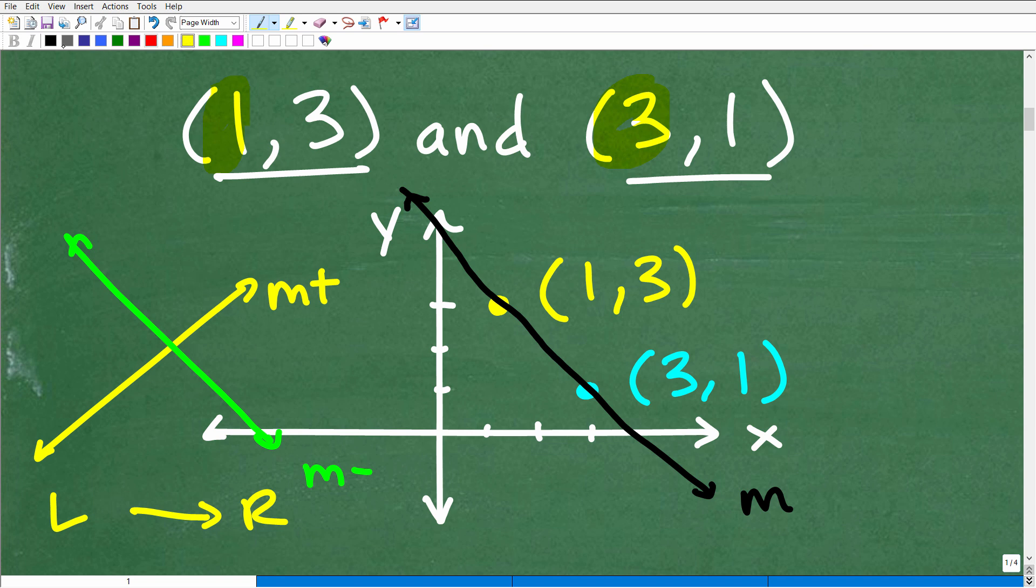Lines that decrease this way, like the line that we're talking about right now, have a negative slope. And then you have totally flat lines, horizontal lines. These have no slope, a zero slope. And then lines that are totally vertical have a slope of what we call undefined. That's undefined slope.